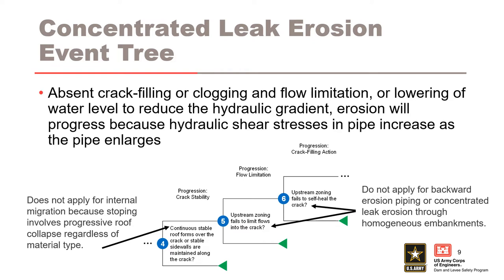There are some common mistakes associated with other internal erosion processes when such event trees are used. For example, a stable roof for node 4 is not applicable for internal migration because stoping involves progressive roof collapse regardless of material type. Therefore, this node should be eliminated or modified to 'must not clog by adjacent materials.' Node 5, flow limitation, and node 6, crack filling, are not applicable for backward erosion piping or concentrated leak erosion through homogeneous embankments. To help avoid misapplication of these nodes, the Corps of Engineers has adopted a slightly different generic internal erosion event tree.